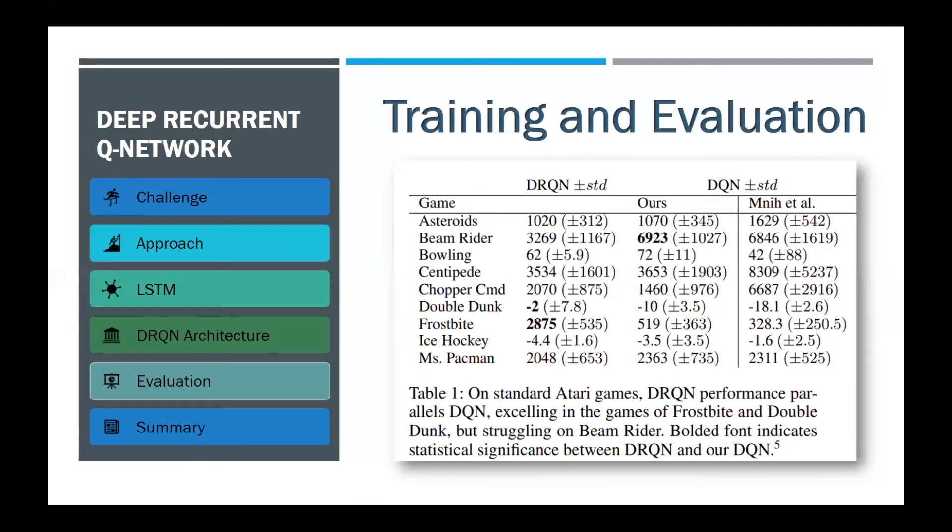These nine Atari games were chosen as good candidates for recurrent learning in this paper. Given the last four frames, all these games are MDPs rather than POMDPs. Thus, there is no reason to expect DRQN to outperform DQN. And, indeed, the results indicate that on average, DRQN does roughly as well as DQN, sometimes better and sometimes worse.